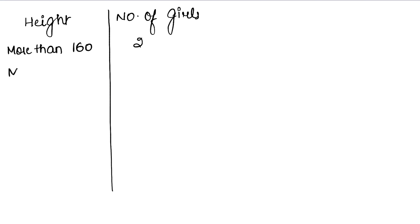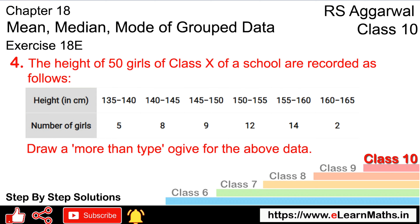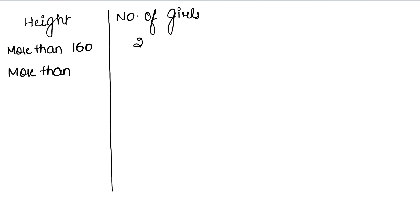Now for the second last class interval, the lower limit is 155. So more than 155: we add 14 plus 2, which gives us 16.